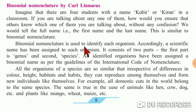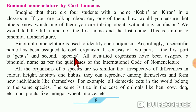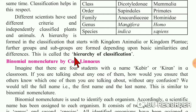Binomial nomenclature is used to identify each organism. Accordingly, a scientific name has been assigned to each organism. It consists of two parts: the first part is genus and the second part is species. For example, the genus of human is Homo and the species is sapiens, that's why human beings are called Homo sapiens.